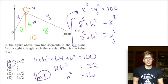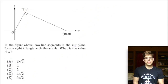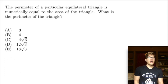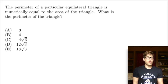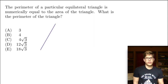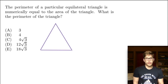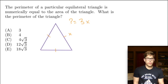So the answer is B. That was a really fun problem. Let's go to the third problem. The perimeter of a particular equilateral triangle is numerically equal to the area of the triangle. What is the perimeter of this triangle? Let's draw a quick equilateral triangle. The perimeter is 3 times x, where x is our side length. Now what's the area going to be? The area equals base times height divided by 2.